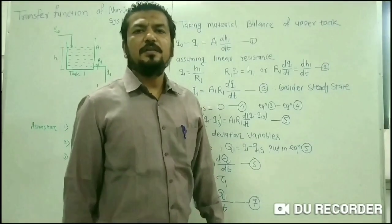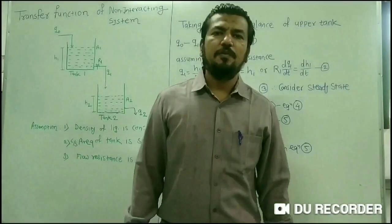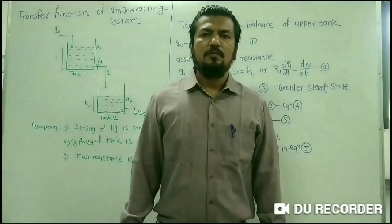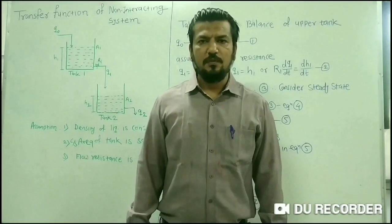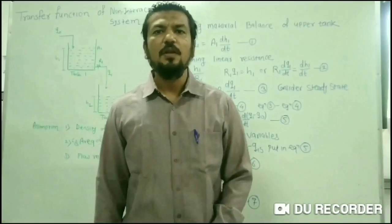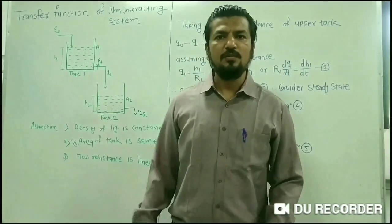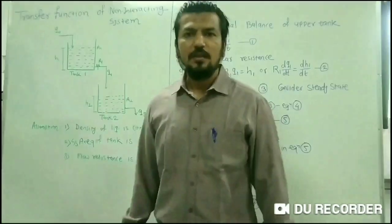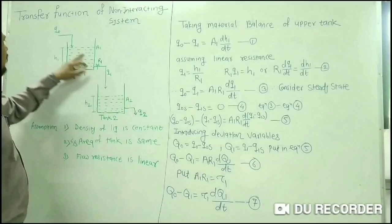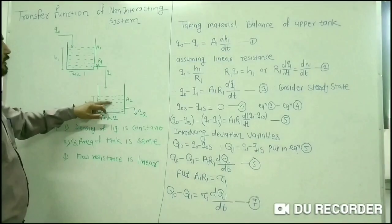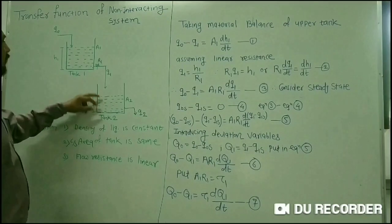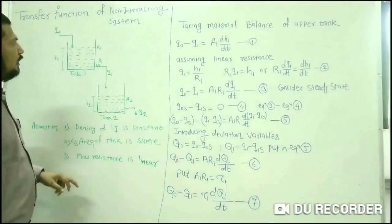Hello everyone. Today we will discuss the determination of the transfer function of the non-interacting control system. A multi-capacity system is one in which there is a flow of mass or energy through a series of two or more first order control systems. A non-interacting multi-capacity system is one where the output of tank number 2 does not affect the head in tank number 1, meaning the heads in both tanks are independent of each other.